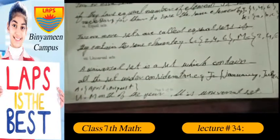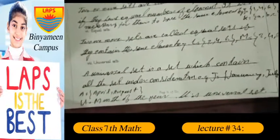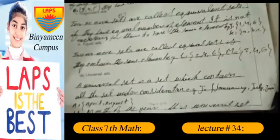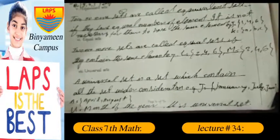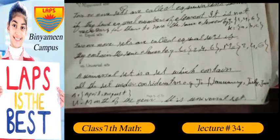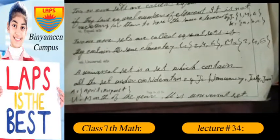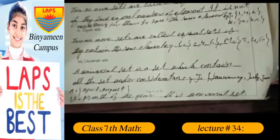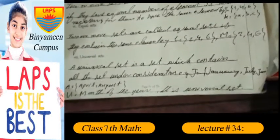Universal set: a universal set is a set which contains all the sets under consideration. For example, set J equals {January, July, June}, set A equals {April, August}, and set U equals months of the year. U is a universal set.